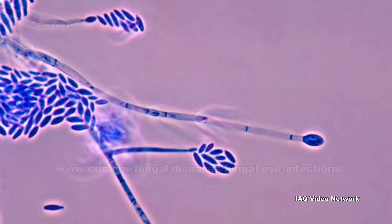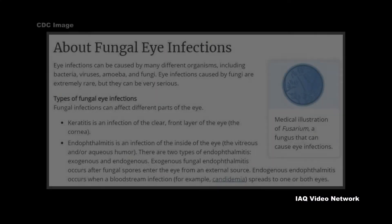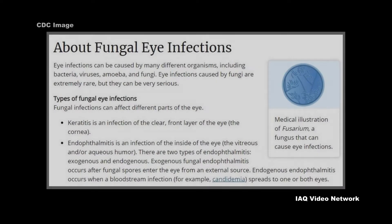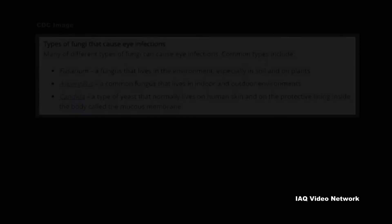Types of fungal eye infections: fungal infections can affect different parts of the eye. Keratitis is an infection of the clear front layer of the eye, while endophthalmitis is an infection of the inside of the eye.